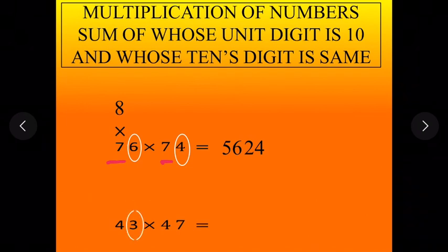So multiply 3 by 7 we get 21. Now adding 1 to 4 we will get 5. Now multiply 5 and 4. So 5 multiply by 4 is 20. So 2021 is our answer. Isn't it so easy?